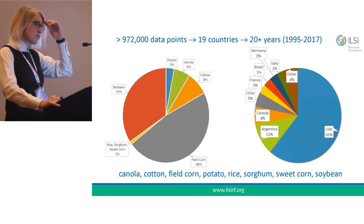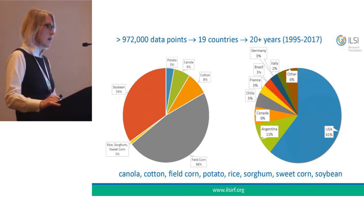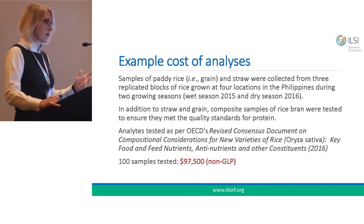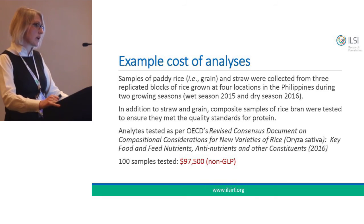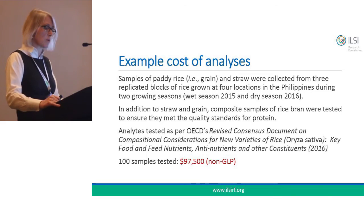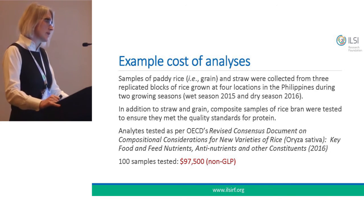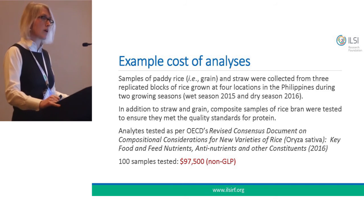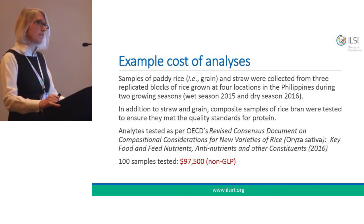Here's an example of the most recent data uploaded into the CCDB, submitted by the International Rice Research Institute, based in Los Baños, the Philippines. The samples analyzed were paddy rice and straw, collected from three blocks of rice grown at four locations in the Philippines over two growing seasons. The bran was also tested to look at protein quality. The analytes were drawn from the most recent OECD consensus document for rice, published in 2016. They tested 100 samples at a cost of $97,500 — a significant amount in the context of a public sector plant breeding program.